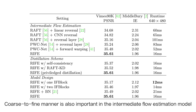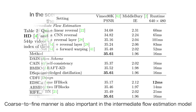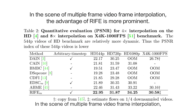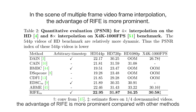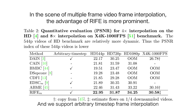Coarse-to-fine manner is also important in the intermediate flow estimation model. In the scene of multi-frame interpolation, the advantage of RIFE is more prominent compared with other methods.